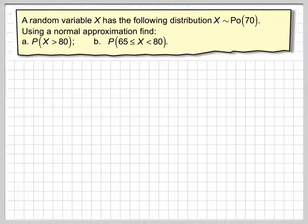What we're going to do in this video is use a normal approximation for Poisson distribution. A random variable X has the following distribution: X is Poisson 70. Using a normal approximation, find the probability that X is greater than or equal to 65 but less than 80.